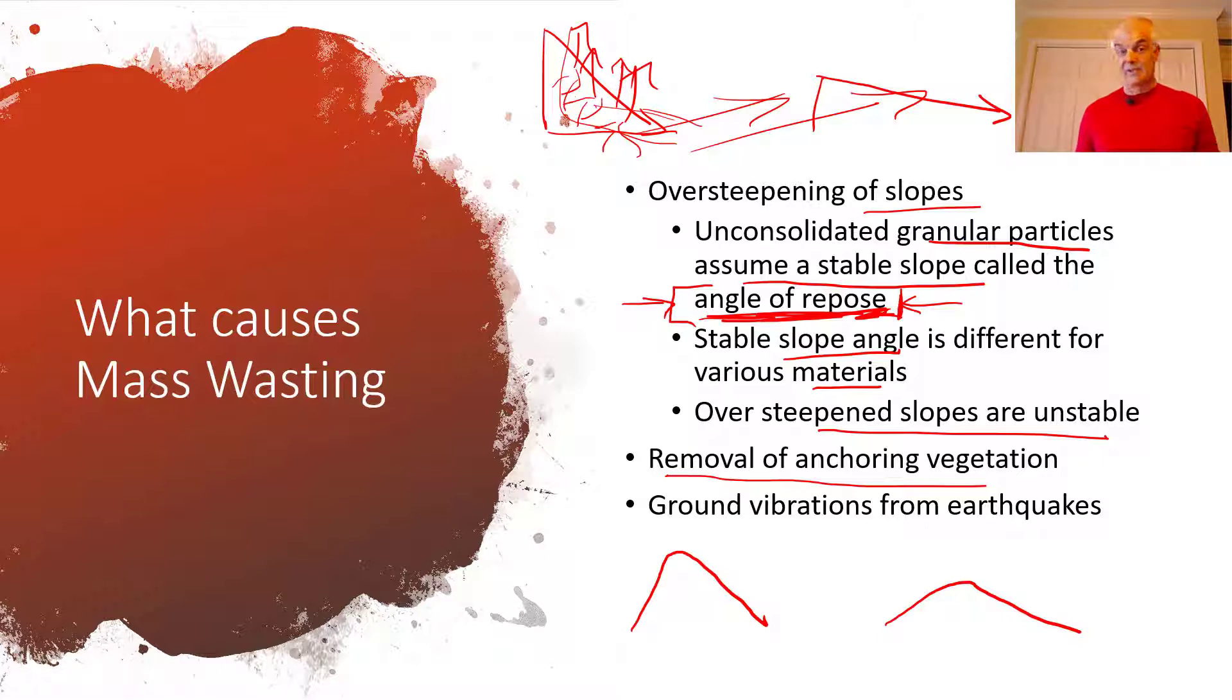Something else that's unpredictable is earthquakes. Earthquakes cause mass wasting events because the shaking triggers any weakness in the material.